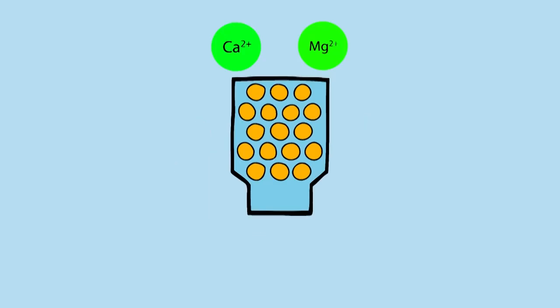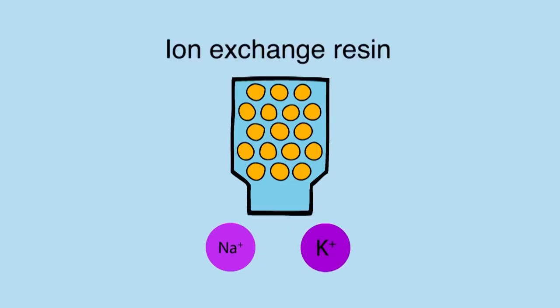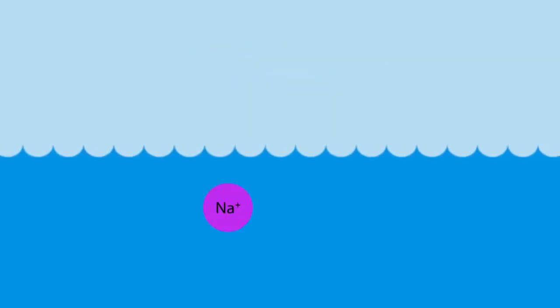Hard water is treated by exchanging the calcium and magnesium ions with sodium and potassium ions through an ion exchange resin. As all sodium and potassium salts are soluble in water, the hard water is now softened.